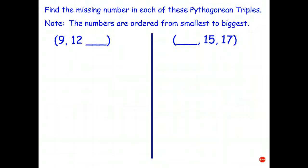Okay, here's a problem for you to solve. I'd like you to have a go at trying to do this first, and then I'll go ahead and do it. Find the missing number in each of these Pythagorean triples. You know that a² + b² = c² for each of these. Note that the numbers are always written smallest to biggest. Go ahead and have a try, then restart the video once you've done that.